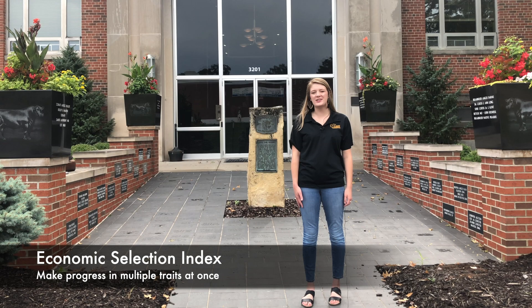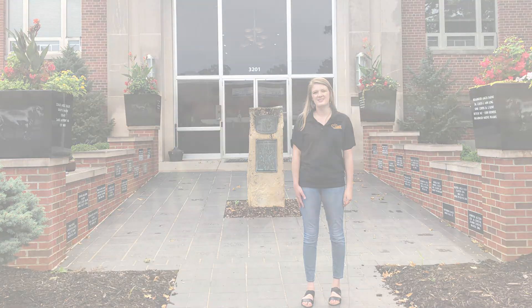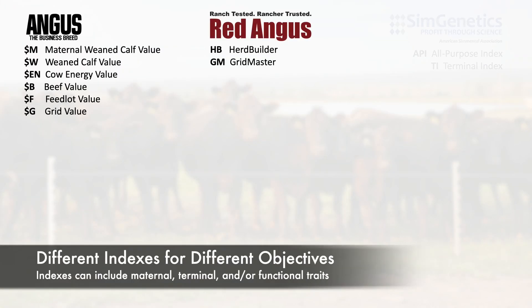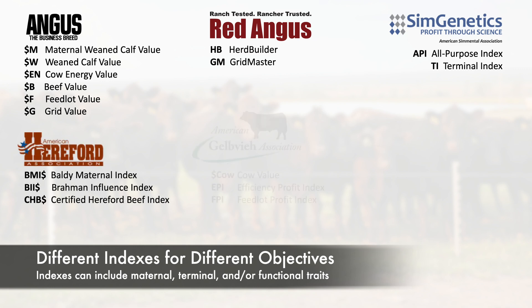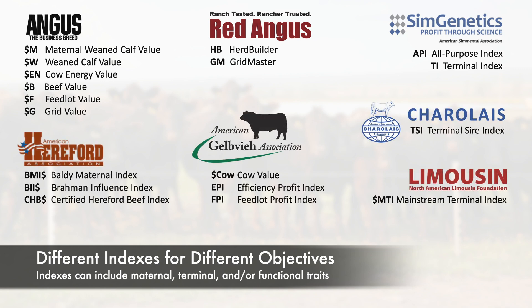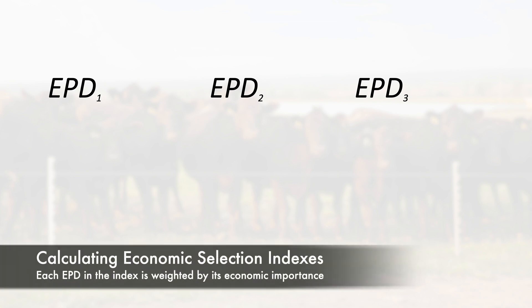How can we make progress in multiple traits at once? The easiest way is to use an economic selection index. Different indexes have been designed for different breeding objectives and can include any combination of terminal, maternal, and functional traits. But all indexes fundamentally work the same way. An index is calculated by multiplying each EPD in the index by a dollar value — in other words, the importance of each trait is weighted by its real-world economic importance.